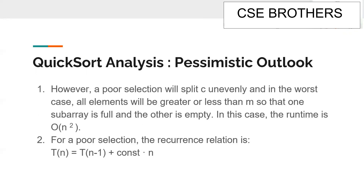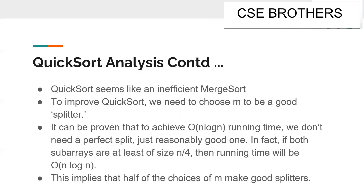Now for the pessimistic outlook: if we split the array unevenly, we end up with an O(n²) solution with recurrence T(n) = T(n-1) + O(n). This worst case occurs when the array is in descending order. Quicksort seems like an inefficient merge sort, so to improve it we need to choose m to be a good splitter.